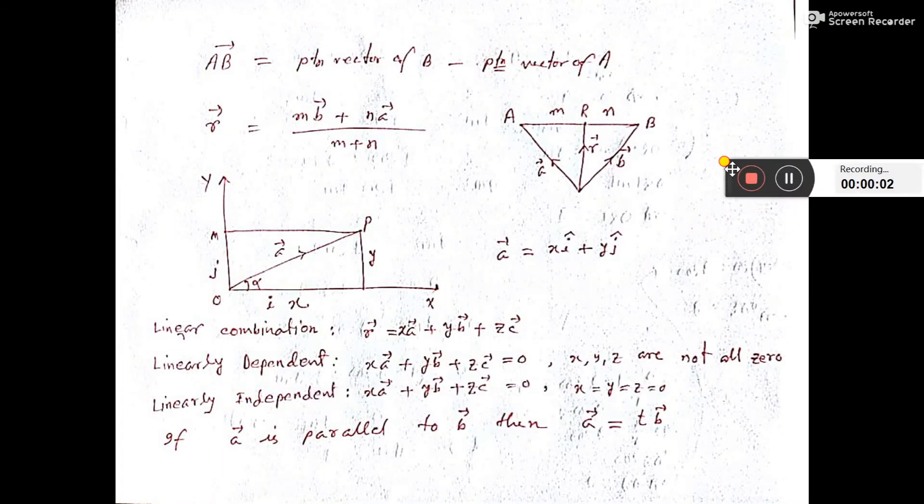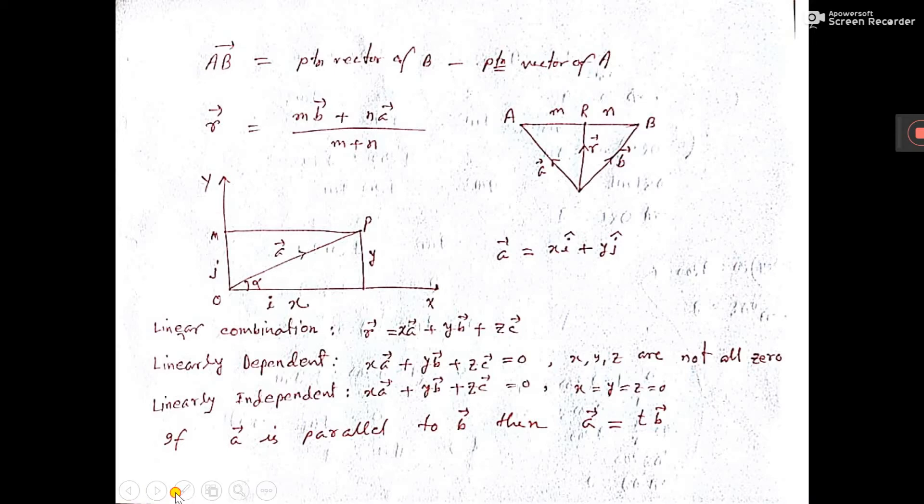We want to do vector now. A B vector. Let's say A B vector. If position vector given of A and B, then A B vector is equal to position vector of B minus position vector of A.